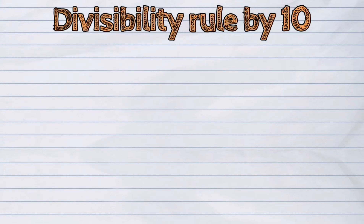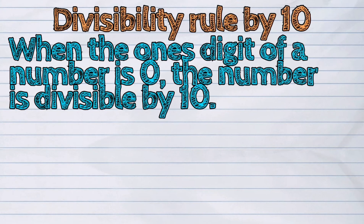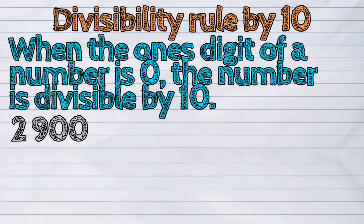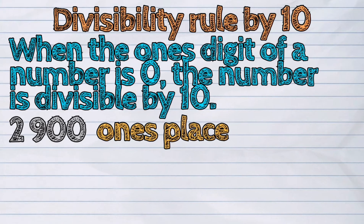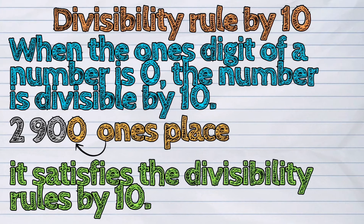Divisibility rule by ten: when the one's digit of a number is zero, the number is divisible by ten. For example, in 2900, the digit in the one's place is zero, so this satisfies the divisibility rule by ten.